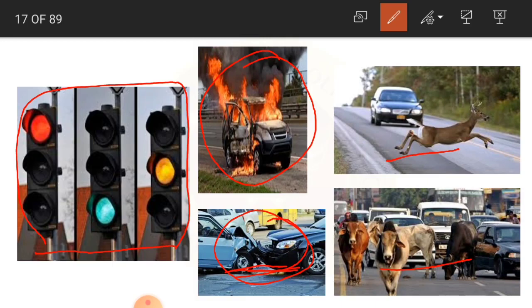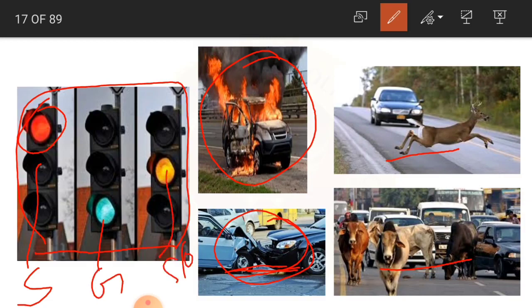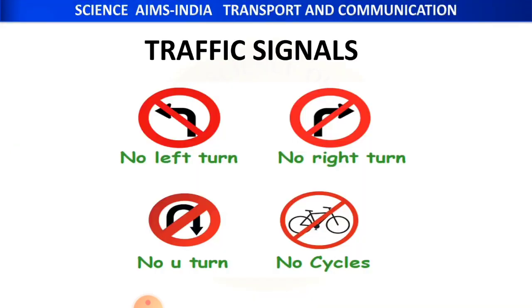You may have observed these traffic lights very frequently when traveling on roads. The red light indicates to stop, the green light indicates you can start your vehicle and go, and the yellow light indicates to slow down your vehicle. According to the traffic on the road, these lights are given so that you know when to stop, start, or slow down your vehicle. These are near the traffic signals.